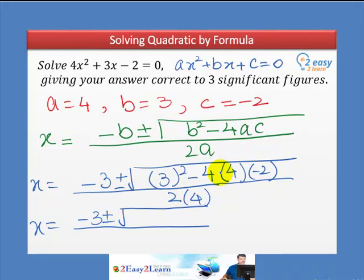When you use the calculator correctly, you will get this answer: 3² - 4 times 4 times -2 equals 41, and 2 times 4 equals 8.